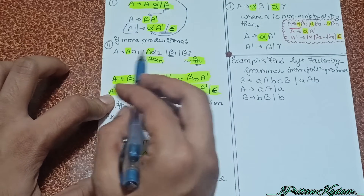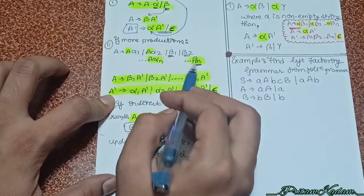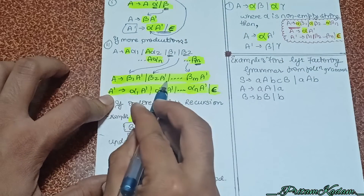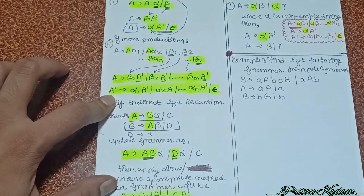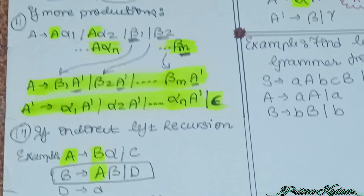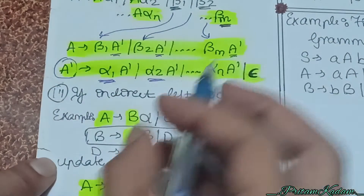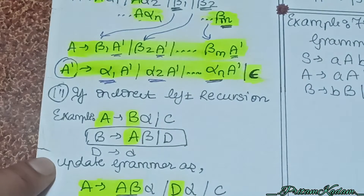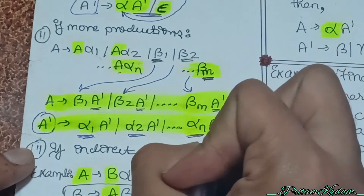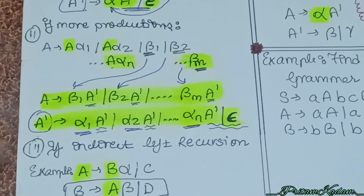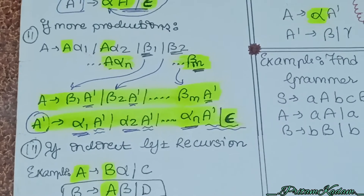If we have a lot of recursions like A → Aα₁ through Aαn, and the remaining parts β₁ through βm, we write the remaining parts as β₁A', β₂A', and so on till βmA' — we write A' after each part. Then in A', we write the recursion parts: α₁A', α₂A', through αnA', and epsilon by default, so that β₁ alone is obtainable from the new grammar.